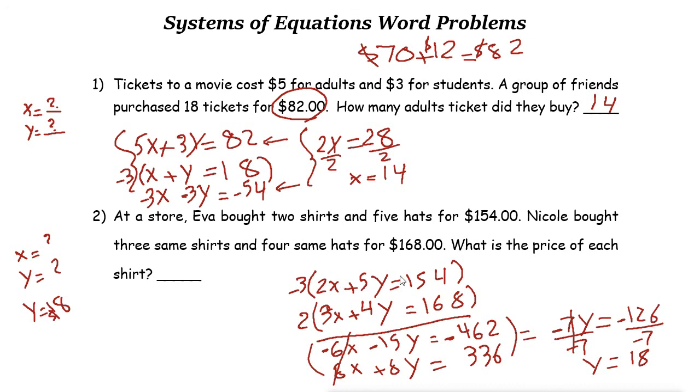Now if you use one equation, let's choose the first one: 2X plus 5 times 18, which is 90, equals 154. Subtract 90 from both sides, then 2X equals 64. If you divide both sides by 2, X is 32. X is 32 dollars, so the shirts are 32 dollars. You can also check your answer by plugging the value of X in this equation or that equation, just to make sure that the hats are 18 dollars and the shirts are 32 dollars.